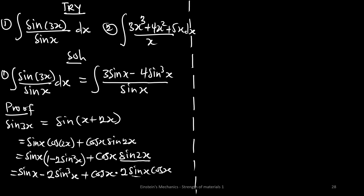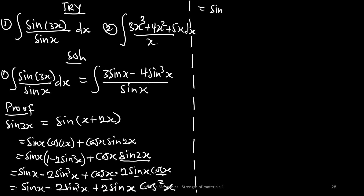So we can write this as sin(x) minus 2sin³(x), plus cos(x) times 2sin(x)cos(x). That gives us 2sin(x)cos²(x). We can also use the identity cos²(x) = 1 minus sin²(x), so we write sin(x) minus 2sin³(x).